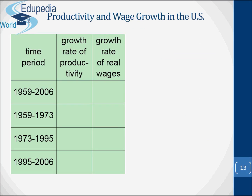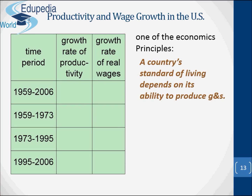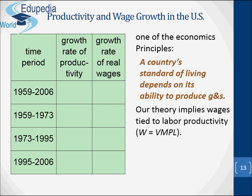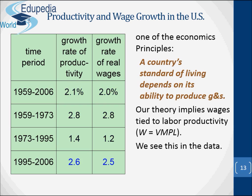Let's talk about productivity and wage growth in the US. One economic principle states that a country's standard of living depends on its ability to produce goods and services. Our theory implies wages are tied to labour productivity: W equals VMPL. The data shows that technological progress benefits workers by increasing real wages. Unfortunately, technological progress also makes some jobs obsolete — for example, the demand for typewriter repair technicians has fallen sharply over the past 25 years.